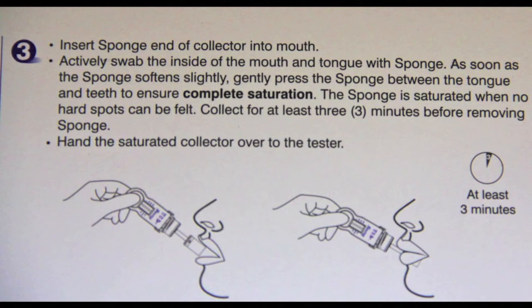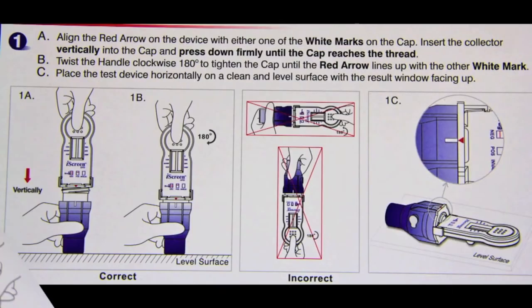Afterwards, the user should hand the saturated collector over to the tester. Then align the red arrow on the device with either one of the white marks on the cap.